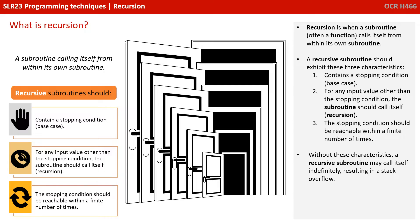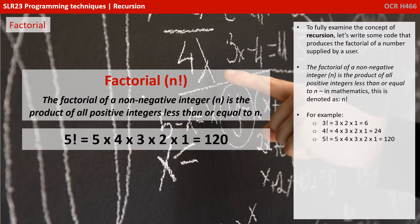And you'll see what we mean by stack overflow later on. So to fully examine the concept of recursion, let's write some code that produces the factorial of a number supplied by a user. The factorial of a non-negative integer n is the product of all positive integers less than or equal to n. In mathematics, we denote this as n! (exclamation mark). So for example, 3 factorial would be 3 times 2 times 1, which equals 6.